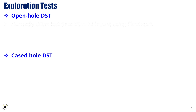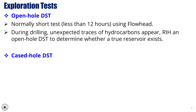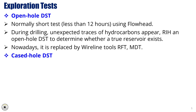The open hole DST is typically a short-term test, usually lasting less than 12 hours, conducted using a flow head. This test is often performed when unexpected traces of hydrocarbons are found during drilling and the objective is to assess whether a true reservoir exists. During the test, the well is open and it helps identify reservoir characteristics and fluid potential. Wireline tools such as RFT (reservoir fluid tester) and MDT (modular dynamic tester) have largely replaced open hole DSTs in modern practices. This type of test helps operators evaluate hydrocarbon presence quickly and determine whether further actions like casing and perforation are needed.